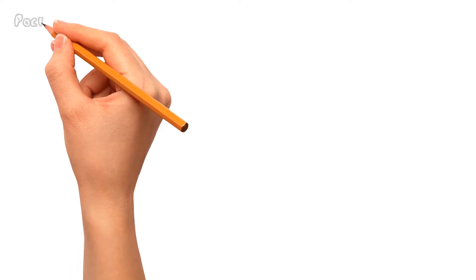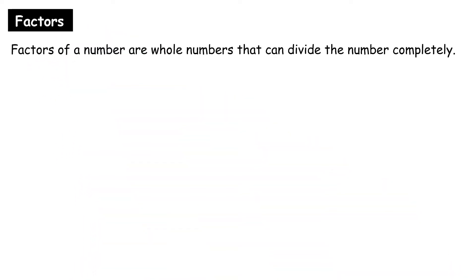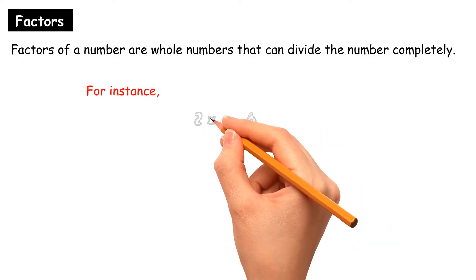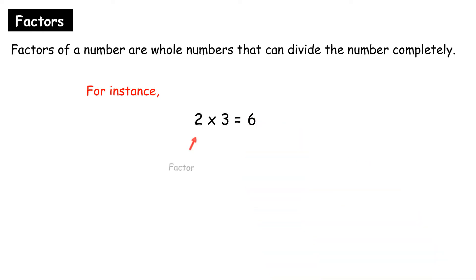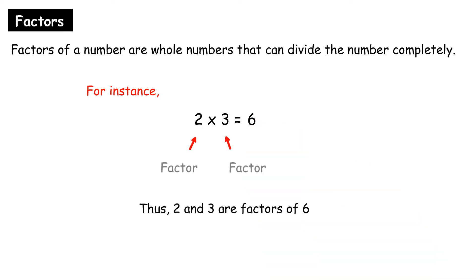What are Factors? Factors of a number are whole numbers that can divide the number completely. For instance, 6 can be obtained by multiplying 2 and 3. Thus, 2 and 3 are the factors of 6.